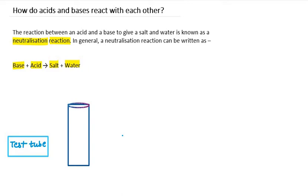Now let's do a demonstration here on the test tube. If we take yellow acid and blue base, and put both of them in the test tube, they form a green color solution — this is just a demonstration. This green solution represents the salt formed, and there will be some water as well. So the acid and base react to form salt plus water, and therefore it is known as a neutralization reaction.